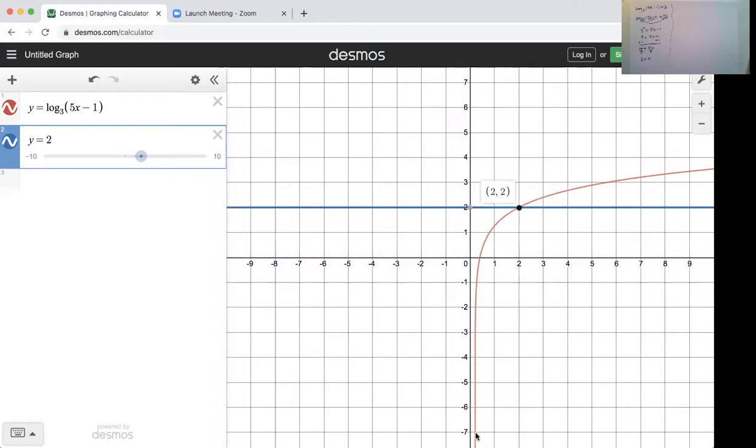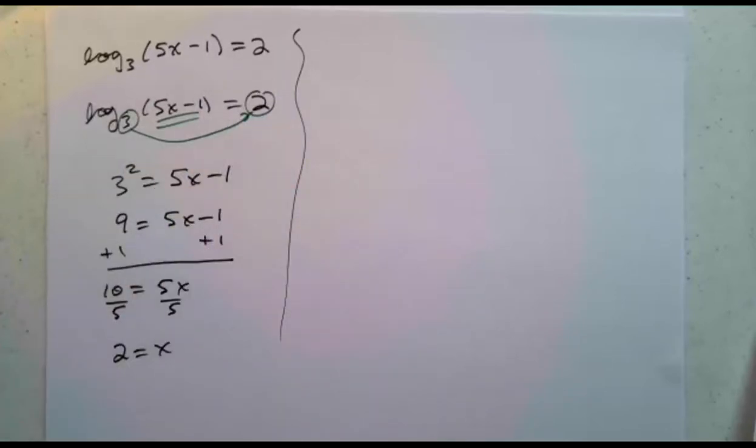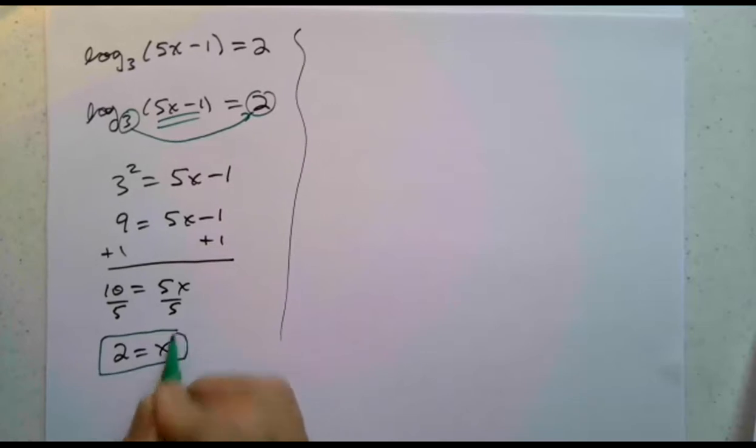So at that value x equals 2, that agrees with what I had here. The x value that you need for that to equal that is when x equals 2, and we were able to get that directly from Desmos.